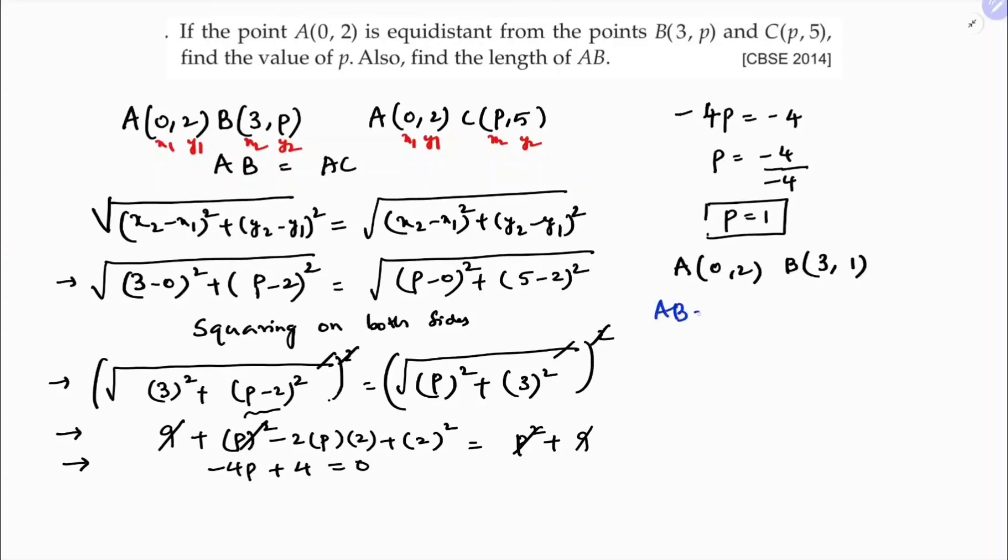So AB distance: under root x2 minus x1 whole square plus y2 minus y1 whole square. So here if you will substitute the values x1, y1, x2, y2.